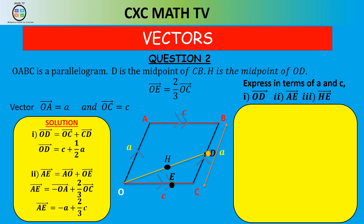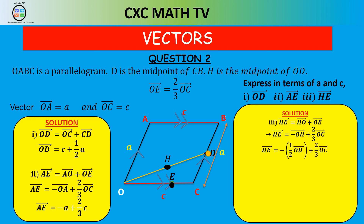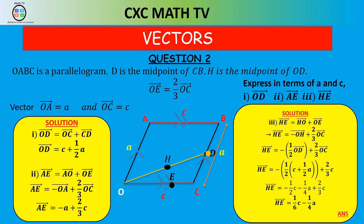For vector HE, going from H to E we go from H to O then O to E: HO plus OE. HO equals minus OH, and since H is the midpoint of OD, OH equals half of OD. So HE equals minus half OD plus two thirds OC. Substituting OD equals C plus half A: HE equals minus half(C plus half A) plus two thirds C, which expands to minus half C minus quarter A plus two thirds C, giving HE equals one sixth C minus quarter A.